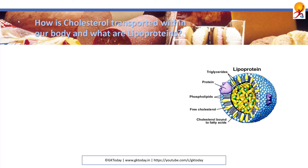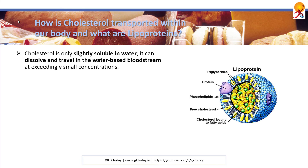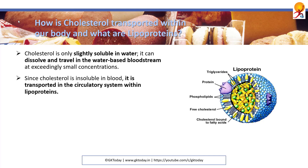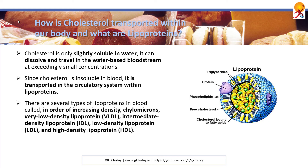How is cholesterol transported within our body and what are the lipoproteins? Cholesterol is only slightly soluble in water and can dissolve and travel in the water-based bloodstream at exceedingly small concentrations. Since cholesterol is insoluble in blood, it is transported in the circulatory system within lipoproteins. There are several types of lipoproteins in blood. In order of increasing density: chylomicrons...